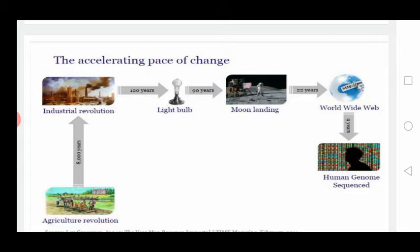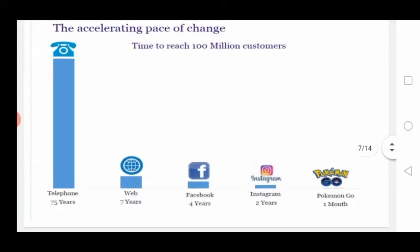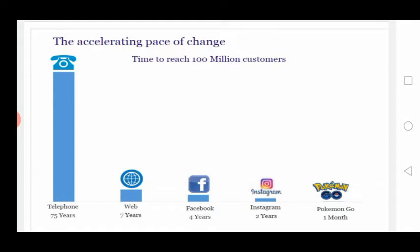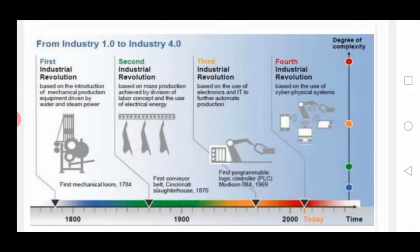AI and ML have been implemented in industries — that is what gives us Industry 4.0. You can also see the accelerating phase of change: the time to reach 100 million customers. With a single telephone it took 75 years; with the web, 7 years; Facebook, 4 years; Instagram, 2 years; and now with certain networks, only one month is enough to reach 100 million customers. That shows how digitization works.